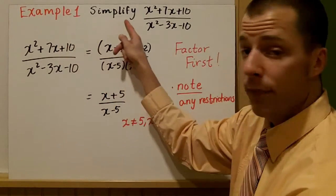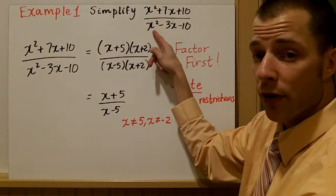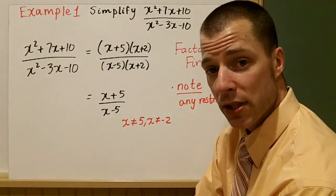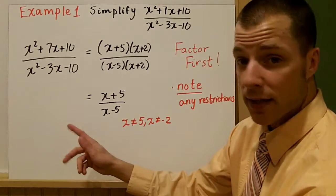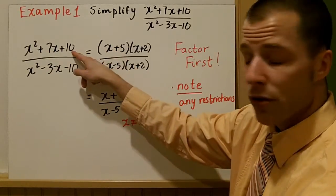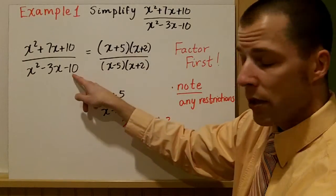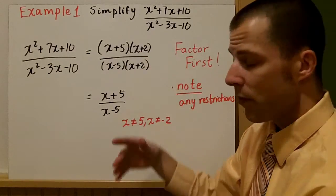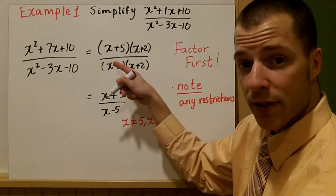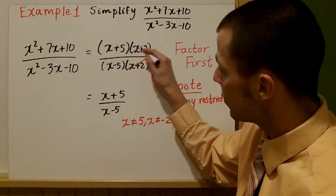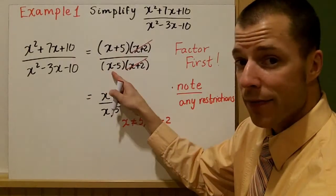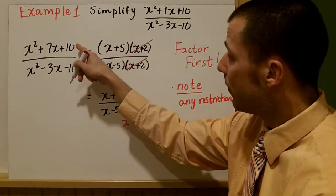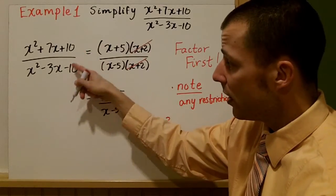Example one: simplify x squared plus 7x plus 10 over x squared minus 3x minus 10. Anytime you multiply or divide, I would strongly suggest you always try to factor first — factor the quadratics in this case. Two numbers that multiply to be 10 and add to be 7 are 5 and 2. Two numbers that multiply to be negative 10 and add to be negative 3 are minus 5 and plus 2. I look and see if there's anything common — there is. The x plus 2 and x plus 2 become 1. I have x plus 5 and x minus 5, nothing common. So that rational expression is in simplest form.